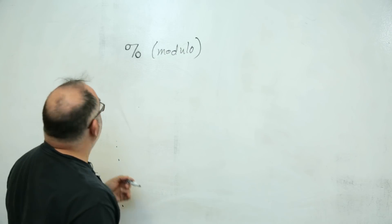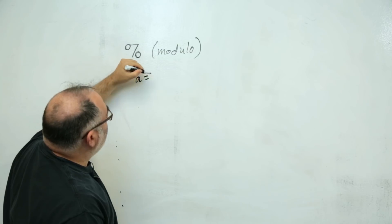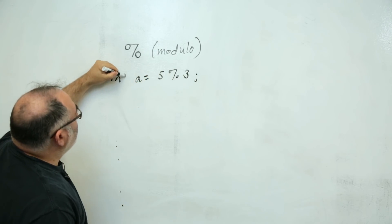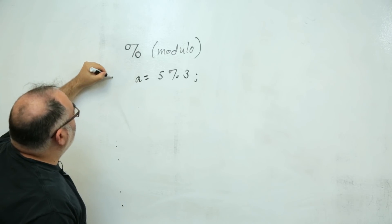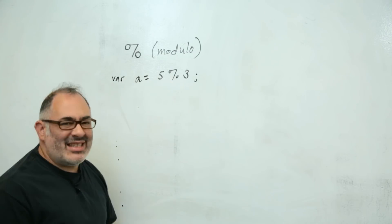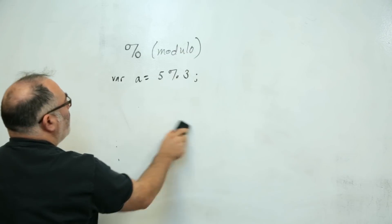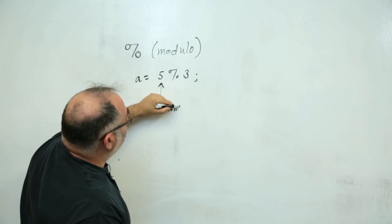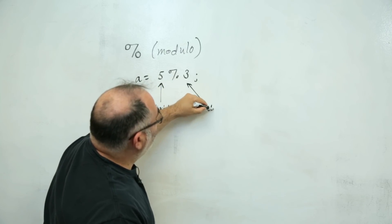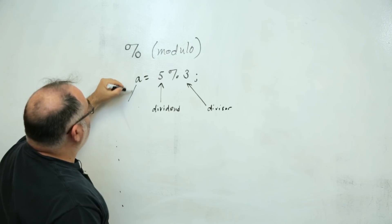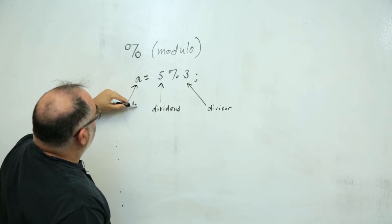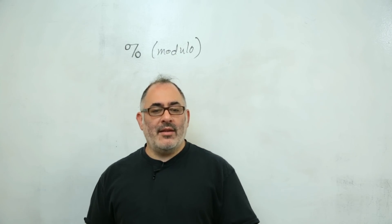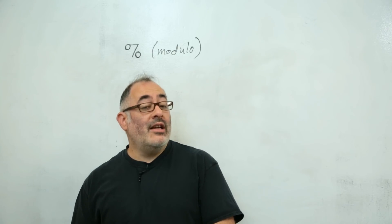So you might see a sentence that looks like a equals five mod three. In processing you might say int a, or in JavaScript with p5 it might be var a. The key here is this five percent sign three. We should talk about the different parts: this part is called the dividend, this part is called the divisor, and this part is called the remainder. So the modulo operator is the remainder after division. After you divide something by something else, sometimes it goes in evenly, but sometimes there's a little bit left over — and that's the spare change we're interested in.